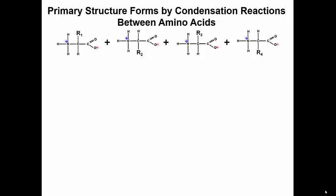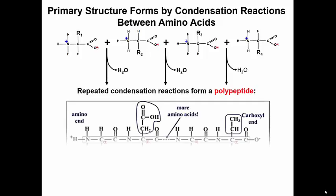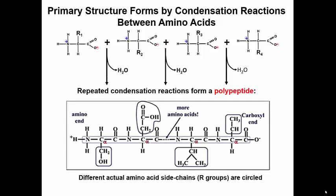They combine in the cell by the process of translation, by dehydration synthesis or water removal, to form the polypeptide. What forms between the polypeptides are sometimes called peptide bonds, but they're really not bonds — they're peptide linkages composed of several different bonds, which I have circled here.